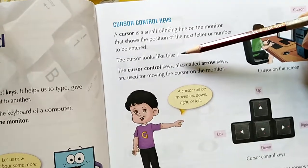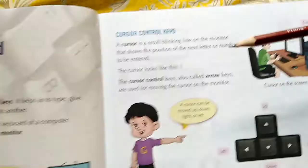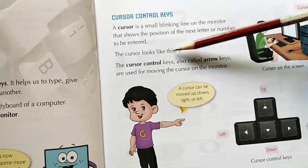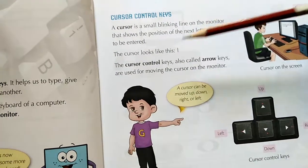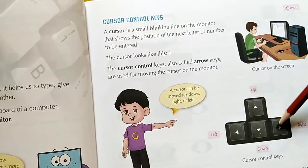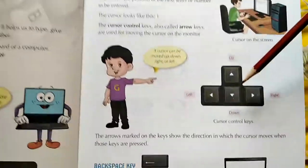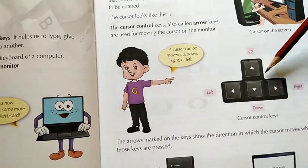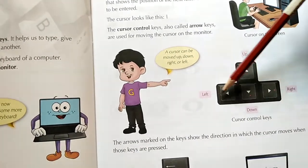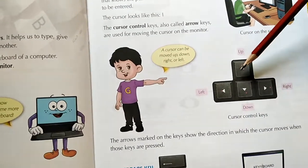This cursor can be moved using the arrow keys. These are called the cursor control keys, also called the arrow keys. When you move left and right, you can also move up and down.